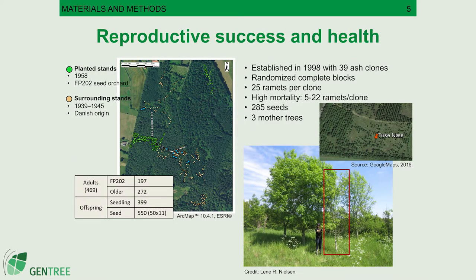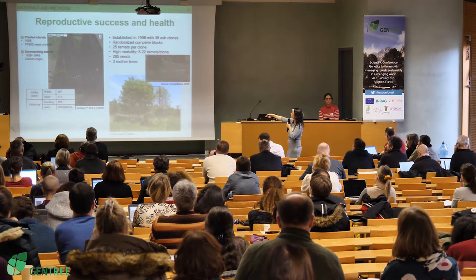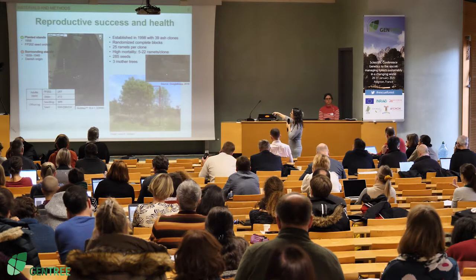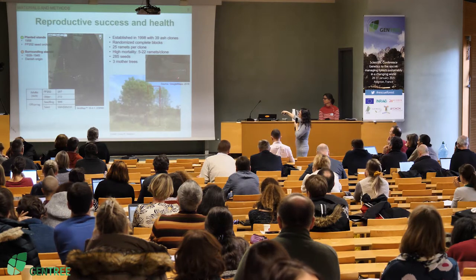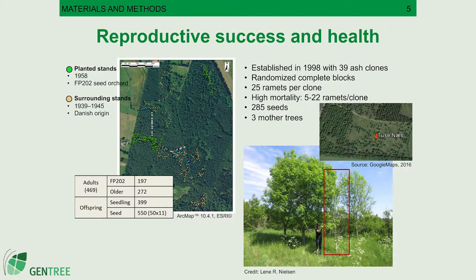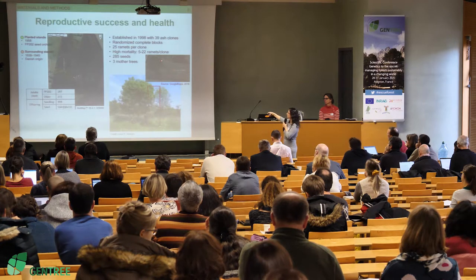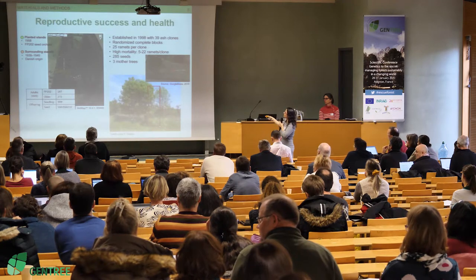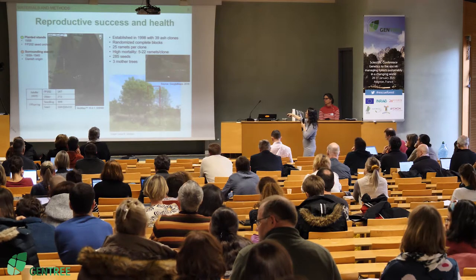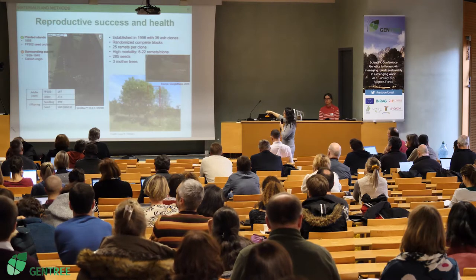The second part of the study was to investigate reproductive success in relation to tree health. The Valbehind continuous mixed forest was one site. The other was a clonal seed orchard established in 1998 with 39 ash clones. When we sampled seeds in 2012, there was already very high mortality — only 5 to 22 ramets per clone remained. We sampled 285 seeds from three mother trees located in the center of the site. You can see the striking difference between a dead or near-dead tree and a very healthy one.